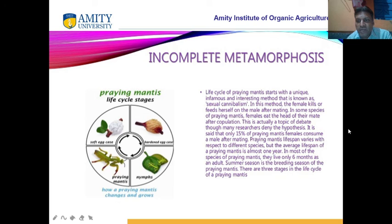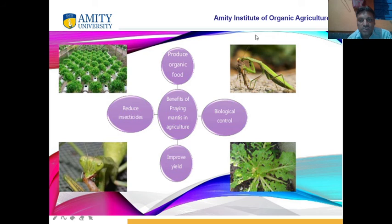Some studies say that only 15% of the praying mantis females consume the male — not all of them. What is the agricultural importance of the praying mantis? They are controlling mosquitoes. They are controlling the population of other disease vectors and other disease-causing insects. They are predators, so they are controlling disease.